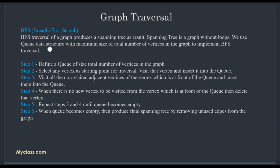For BFS we use a queue data structure with maximum size equal to the number of vertices in the graph. The algorithm: first, define a queue of size equal to total number of vertices. Then select any vertex as a starting point for traversal, visit that vertex, and insert it into the queue.